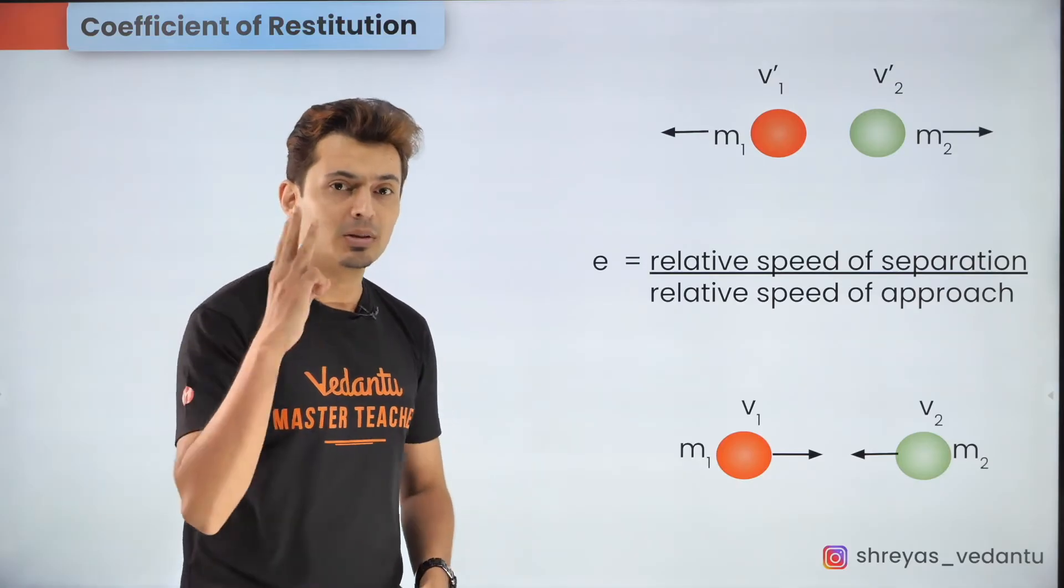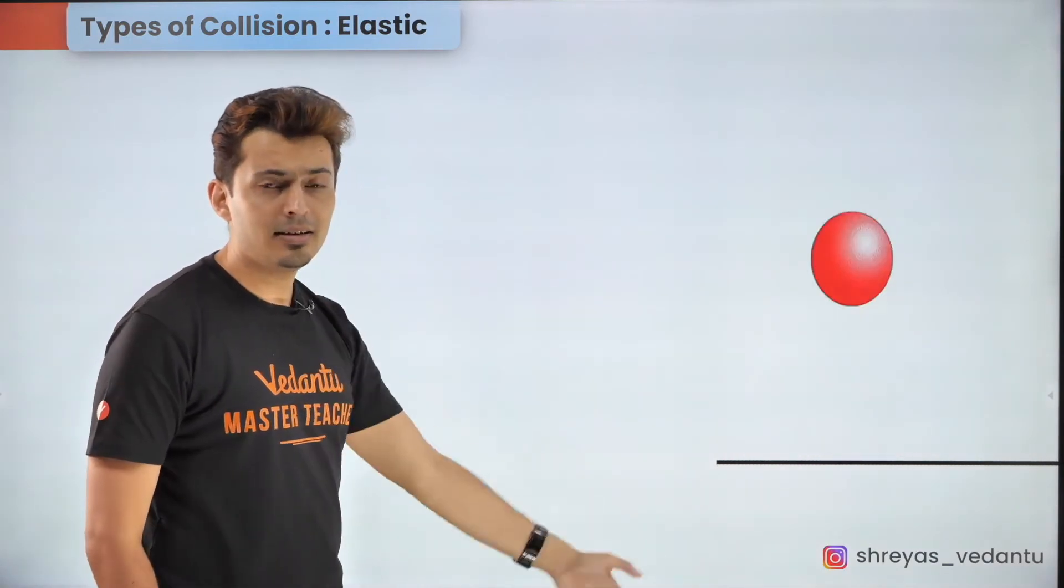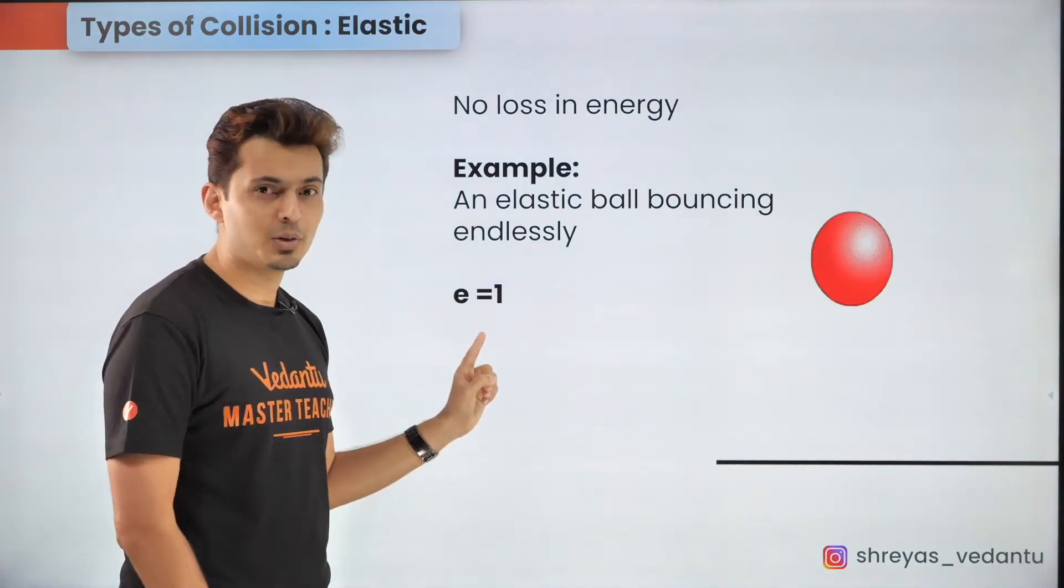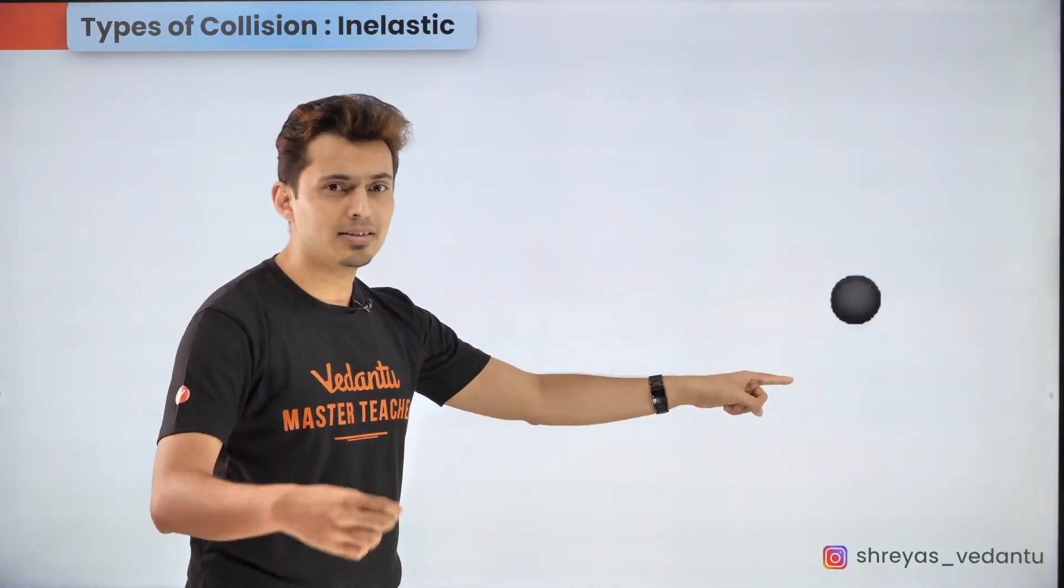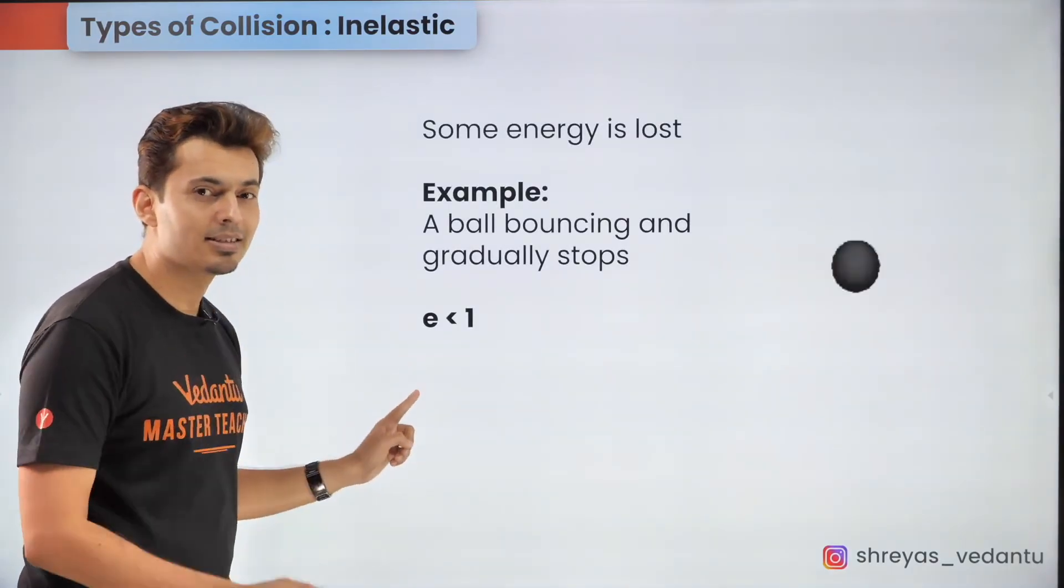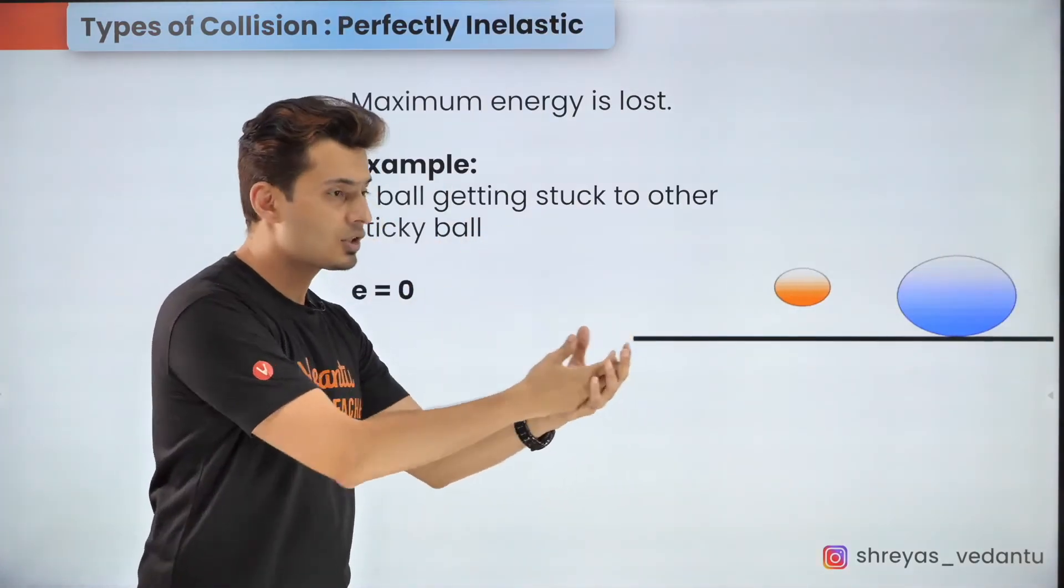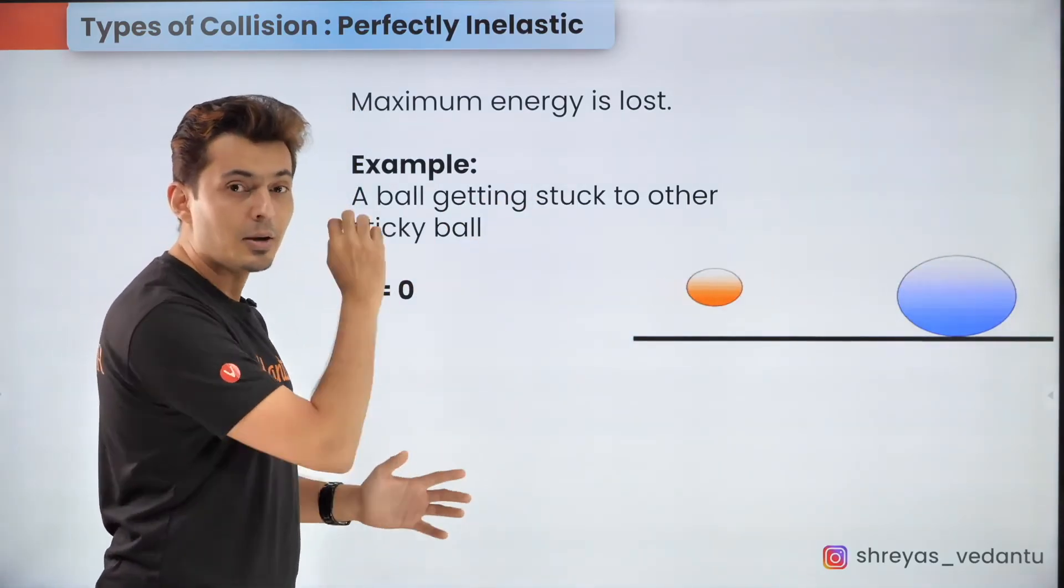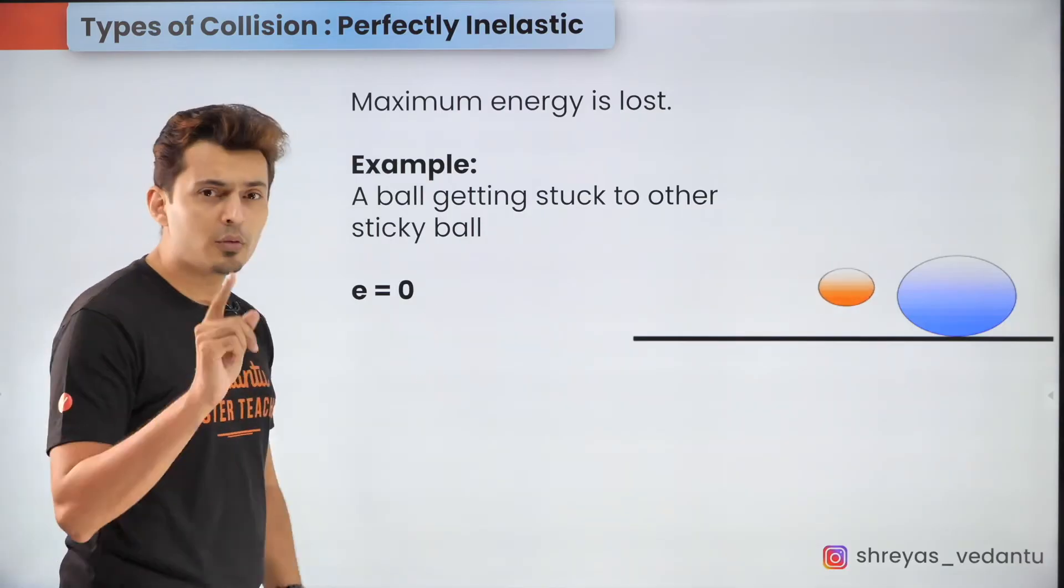Now collisions can be categorized into three different types. The first one is elastic where you can think of a ball which is dropped and endlessly bounces off without losing any of its energy. In those cases the restitution coefficient is 1. Now the more realistic scenario is where you drop a ball and it slowly loses its energy into different forms and the value of the coefficient of restitution in those cases is less than 1. Now the third category is where a ball or an object goes and sticks to another object and moves along with it. Maximum energy is lost in a perfectly inelastic collision and the value of the coefficient of restitution is 0 for those kind of collisions.